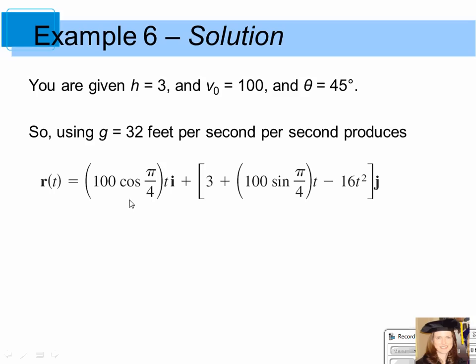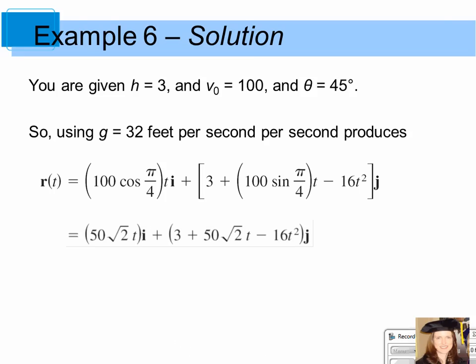Plugging those values in gives v sub 0 cosine theta times t times i plus h plus v sub 0 sine theta times t minus 16t squared times j. Simplifying by evaluating cosine and sine of pi over 4, we get 50 square root of 2 times t times i plus 3 plus 50 square root of 2 times t minus 16t squared times j. This vector-valued function represents the path of the baseball.